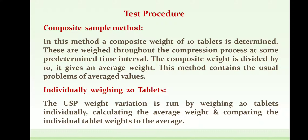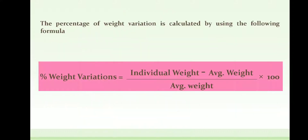In the individual weighing of 20 tablets method, which is generally the USP weight variation method, 20 tablets are weighed individually, their average weight is calculated, and each individual tablet weight is compared with the average. The percentage weight variation is calculated using the formula: percent weight variation equals individual weight minus average weight, divided by average weight, multiplied by 100.